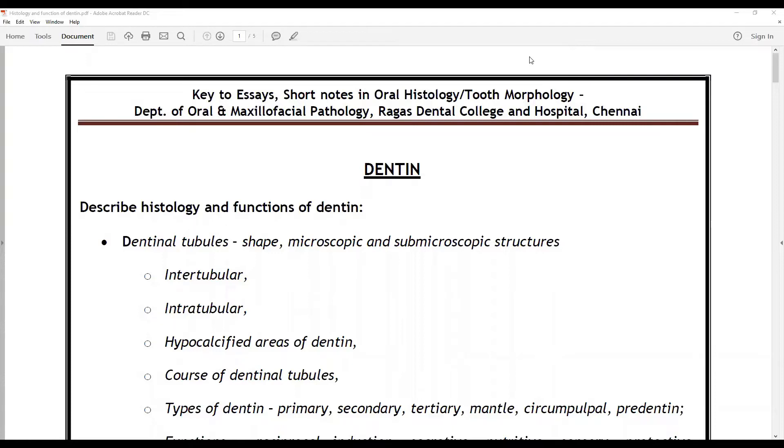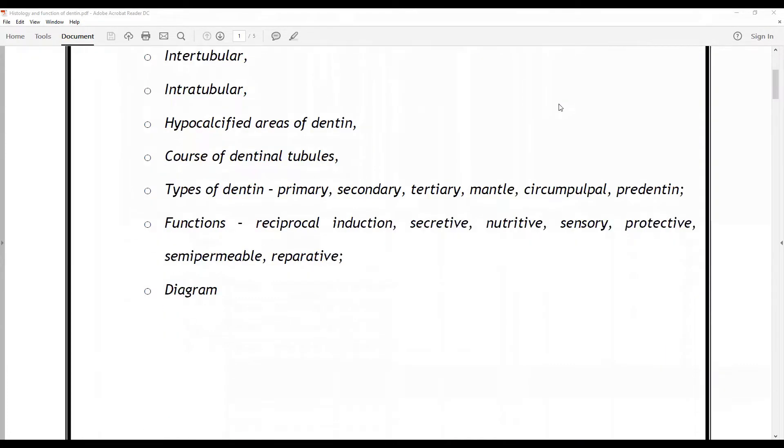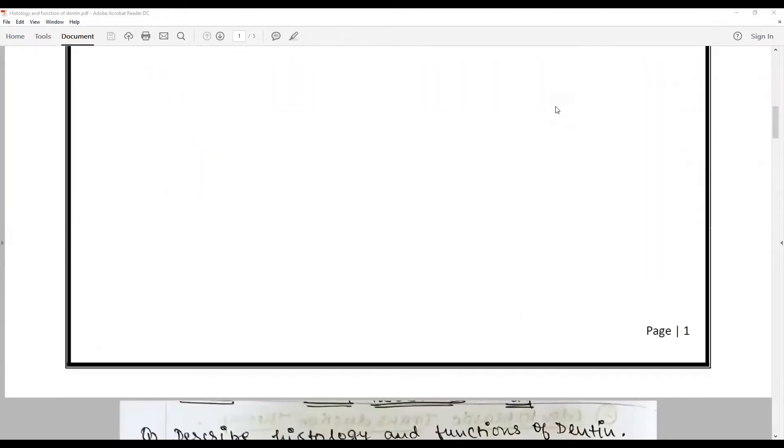For this we need to talk about the dentinal tubules shape, microscopic and submicroscopic structures including the types, intratubular, intratubular, the hypercalcified areas, the course of dentinal tubules, the types of dentin, and the functions, all with diagrams. Jumping into the actual answer: